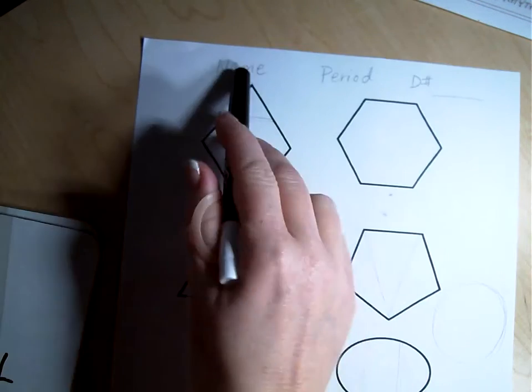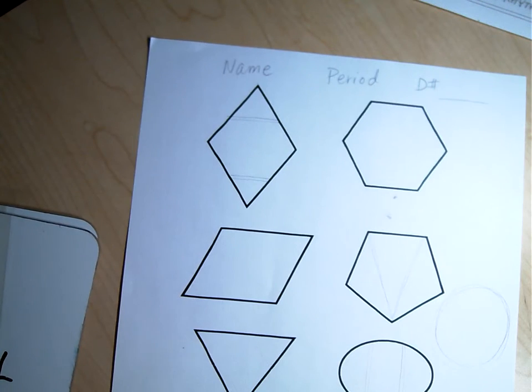This is your worksheet. I need you to make sure your name, period, and desk number are here. So if it ends up on the floor, on the counter, I can put it back where it belongs.